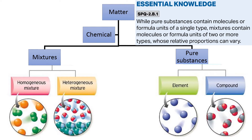In Topic 1.3, I discussed the classification of matter on the basis of chemical properties. It can be basically classified into mixtures and pure substances. We already discussed pure substances in Topic 1.3 — it was classified into element and compound. In this topic, we will be discussing more about mixtures. Mixtures can be further classified into homogeneous mixtures and heterogeneous mixtures.